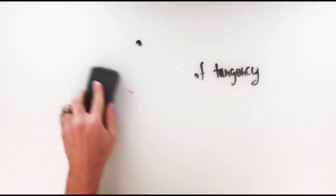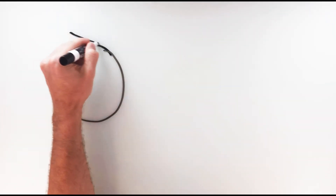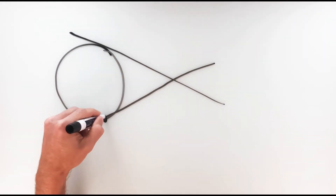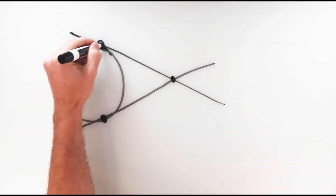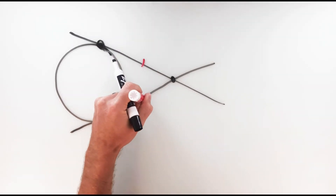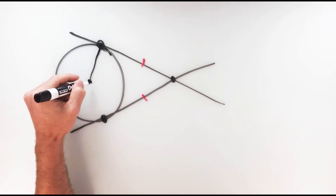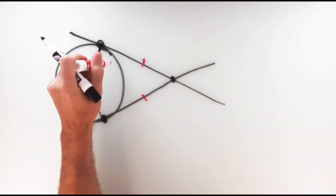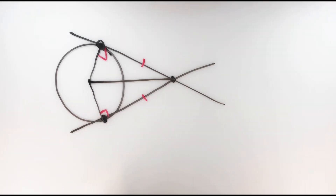Another useful property about tangents: if you have two tangent lines that meet at a point outside of a circle, then those two segments from each point of tangency to the point where they intersect are congruent to one another. This can be proven using right triangles — drawing the radius to each point of tangency gives right angles, and the two resulting triangles are congruent by the hypotenuse-leg theorem.